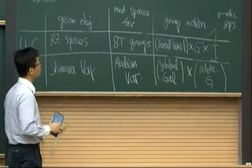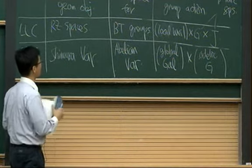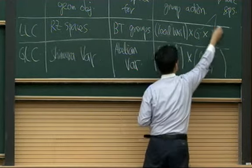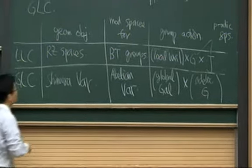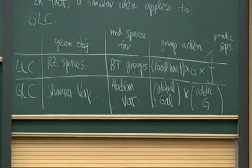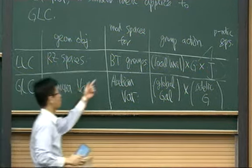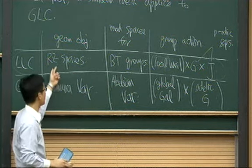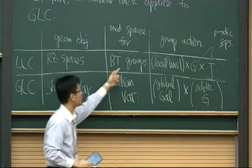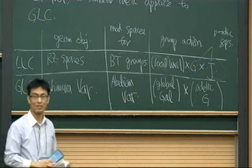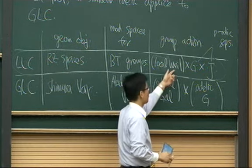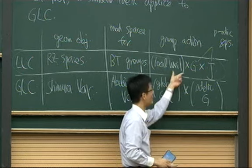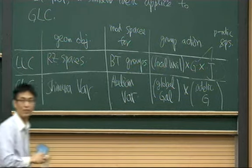My goal today is to make sense of this picture. I won't say anything about Shimura varieties, but I'll explain what Barsotti-Tate groups are and how to define Rappoport-Zink spaces as moduli spaces for Barsotti-Tate groups, and at least briefly indicate how you get this group action on the cohomology.